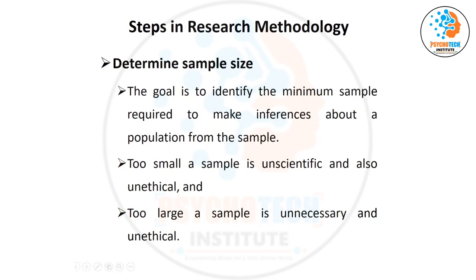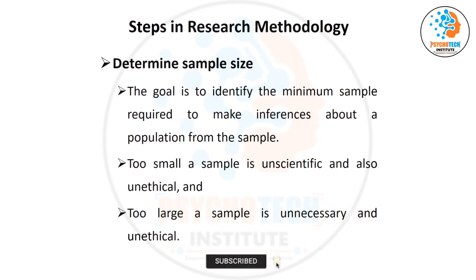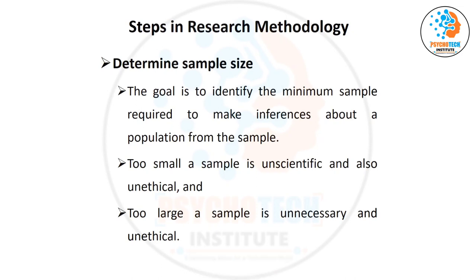In exam questions, it may be asked: the sample size formula is associated with — alpha (type one error), power, beta (type two error), and prior result — and 'all of the above.' You can easily identify that it depends on each of these. Or the opposite question: the sample size is NOT dependent on — and you can identify the answer the same way.